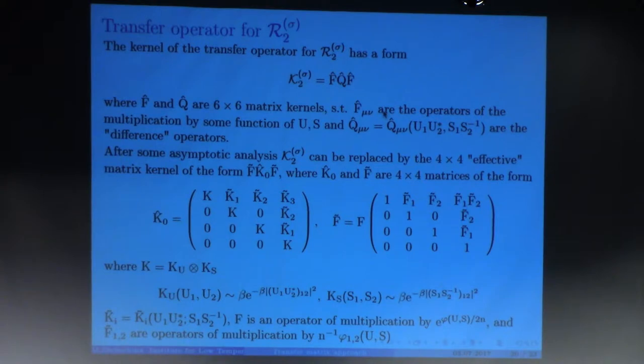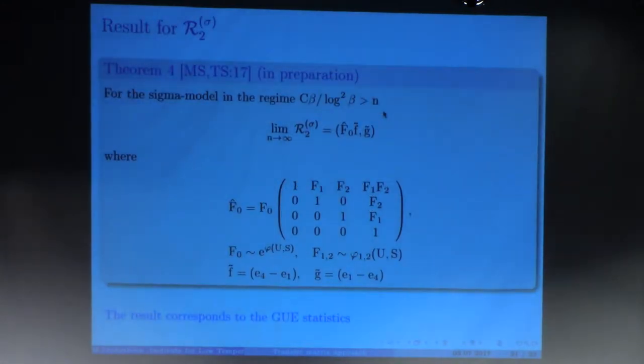If you exponent this Jordan cell because it's Jordan cell into the nth power, you will obtain here of course on the diagonal F exponent N. Here you obtain F exponent N but times N, and it is good because here is 1 over N before the exponent. So here you obtain N and here you obtain N square. So the limiting expression looks very nice.